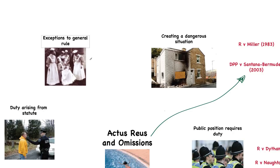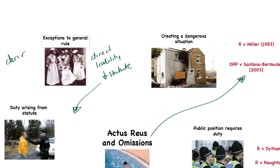Those occasions arise in certain constructed positions. The first exception is direct liability, which comes directly from statute — where the statute says you must act. The second exception is known as derivative liability, where certain people have a duty to act. For example, a nurse who fails to act as part of their job to care for somebody would be committing an omission and would be liable.